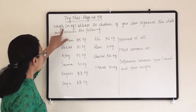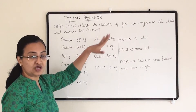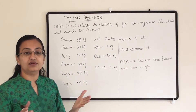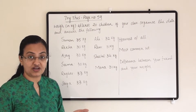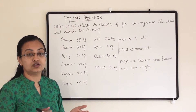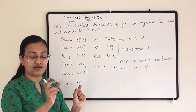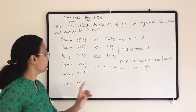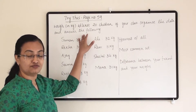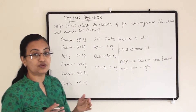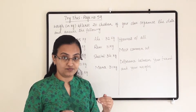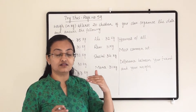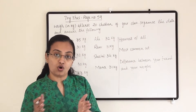We have to note down the weight in kg of at least 20 children of your class. You can randomly ask any of your friends or students what their weight is, write their name and weight, and note them all down. Then organize the data in ascending or descending order so that we will get to know who has less weight and who has more weight.